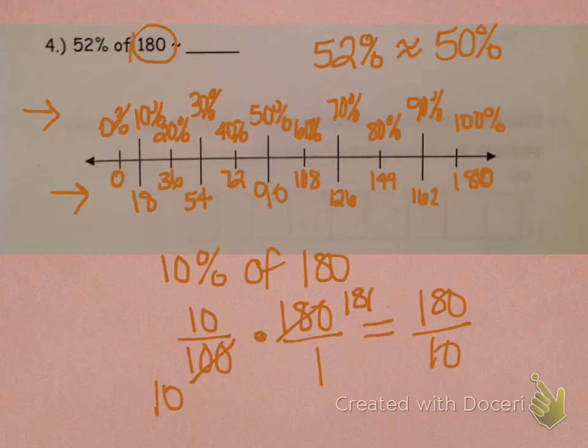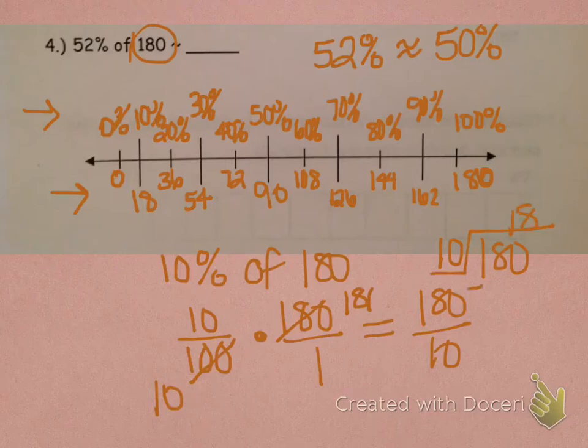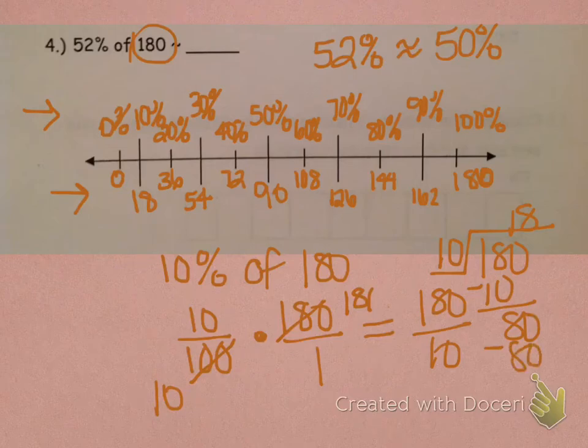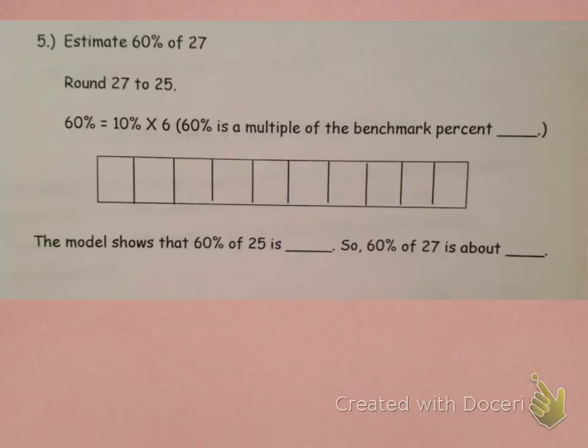And then, multiply straight across, saying 180 over 10. And then, we could mark out our zeros, or divide. 180 divided by 10, and that gives us 18. So, that's how we would figure out what's supposed to go here. And then, it's just multiples of 18. 18 times 2 is 36. 18 times 3 is 54. So on, and so forth.